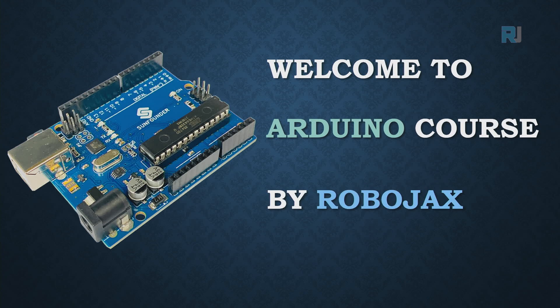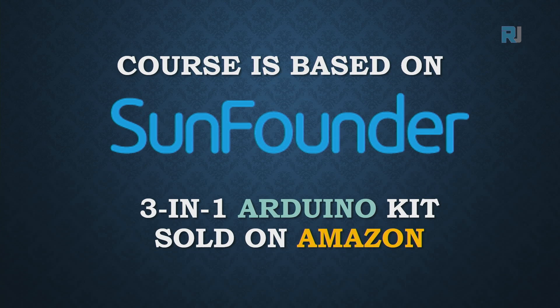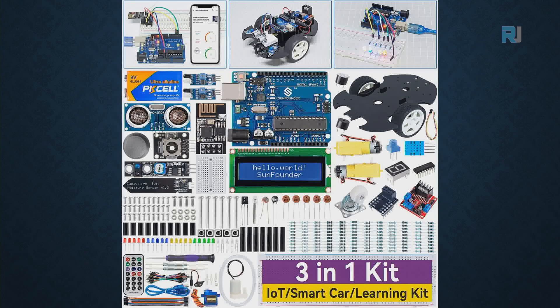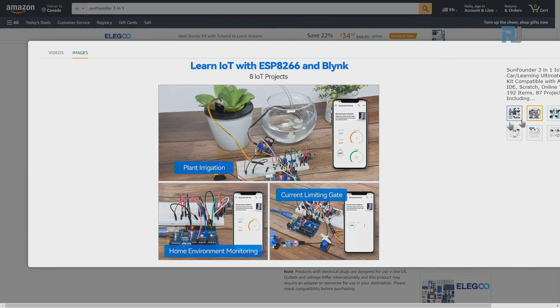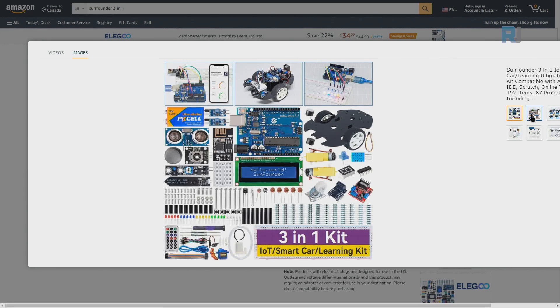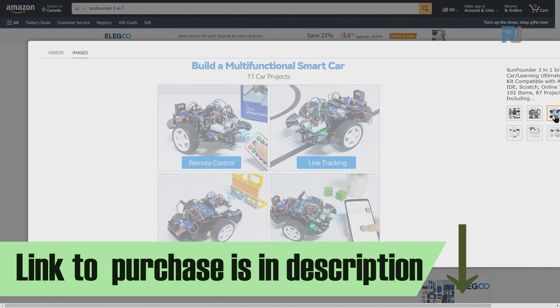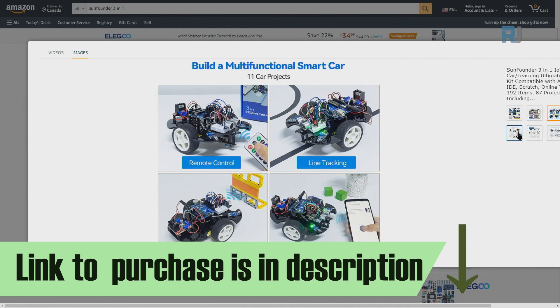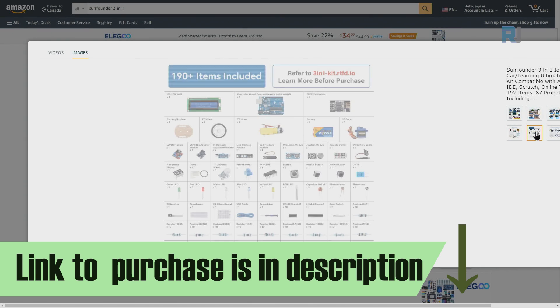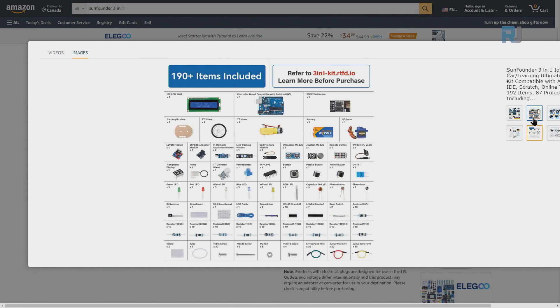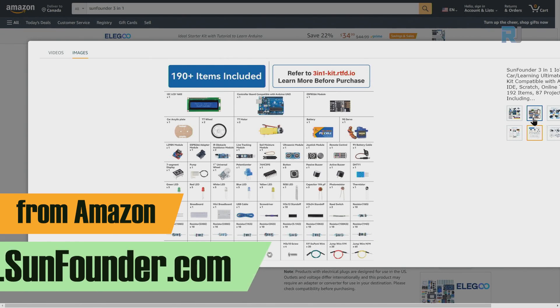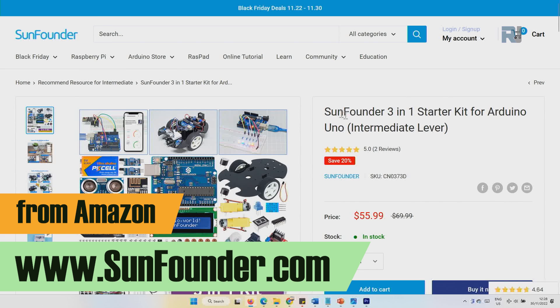Welcome to Arduino course by Robojax. This course is based on SunFounder 3-in-1 Arduino kit sold on Amazon. Everything that you learn in this course is included in this kit. The course comes with tons of components and projects, all with instruction and video, for smart car and other projects that you can use for school or home automation. You can purchase it from SunFounder.com.